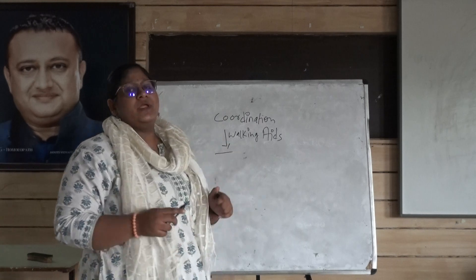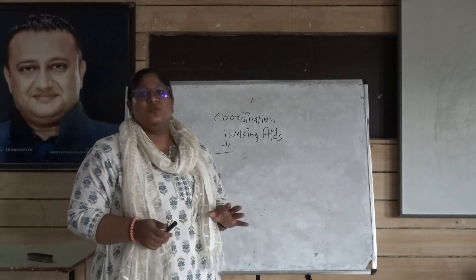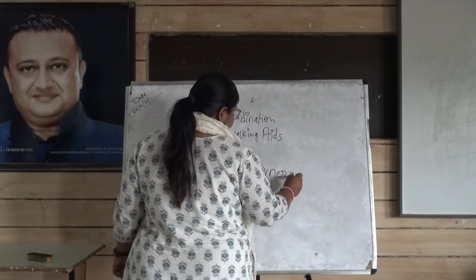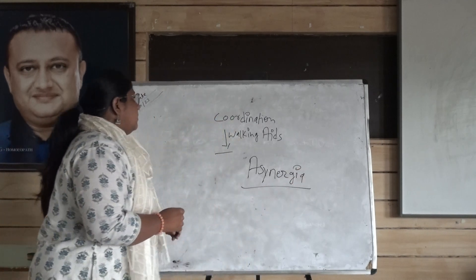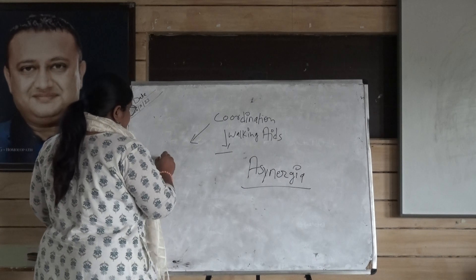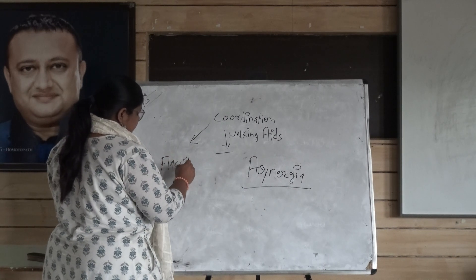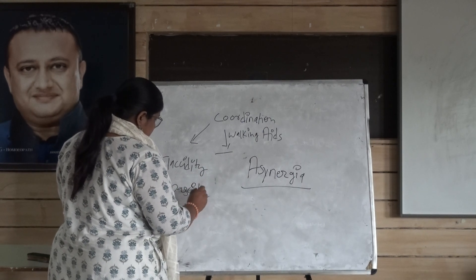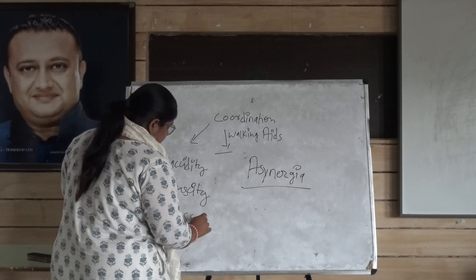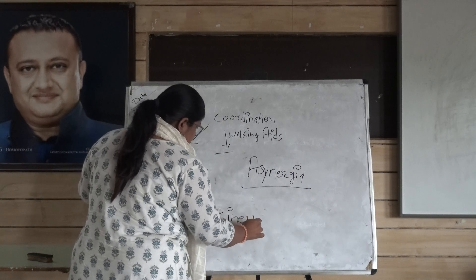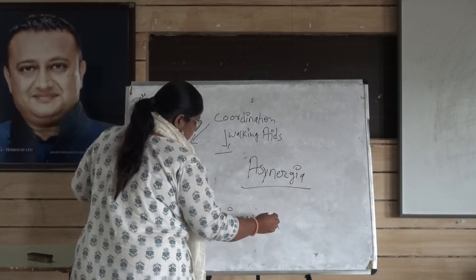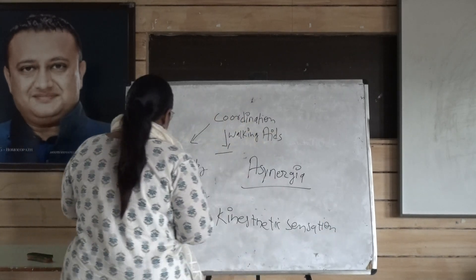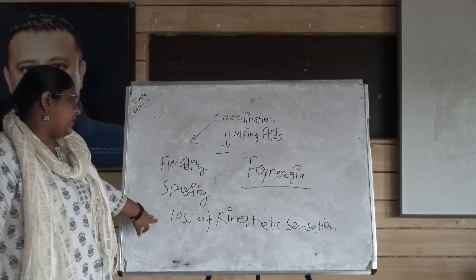And what is in-coordination? In in-coordination, we focus on the jalhi movements that is known as synergy. And the causes of in-coordination are fragility, spasticity, and loss of kinesthetic sensation. We will understand what is fragility, what is spasticity, and loss of facial sensation.